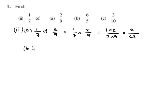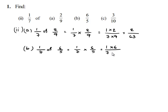Similarly, the second part: 1/7 of 6/5 is nothing but 1/7 multiplied by 6/5, which equals 1 multiplied by 6 upon 7 multiplied by 5. That gives 6 upon 35.